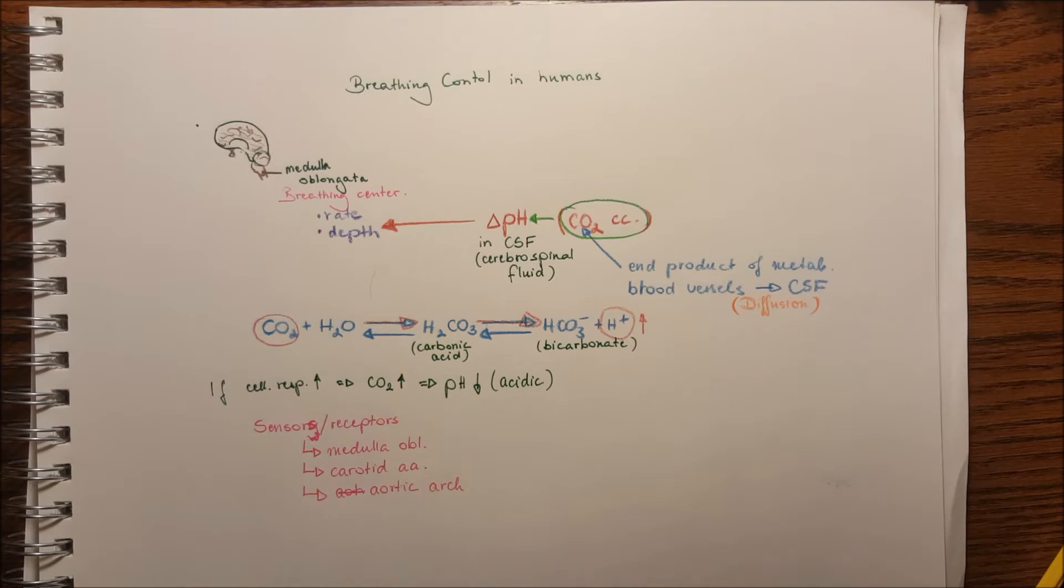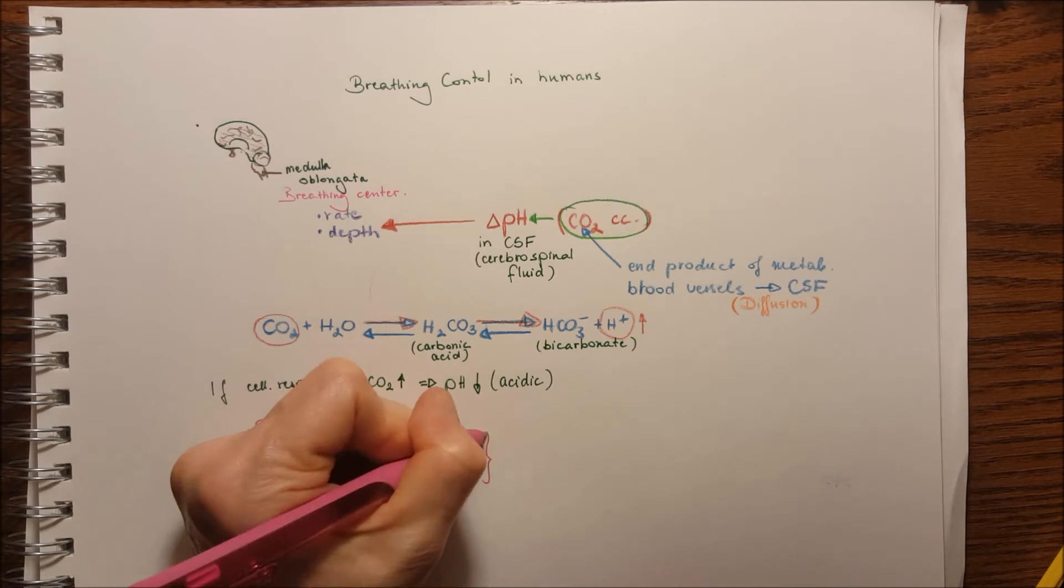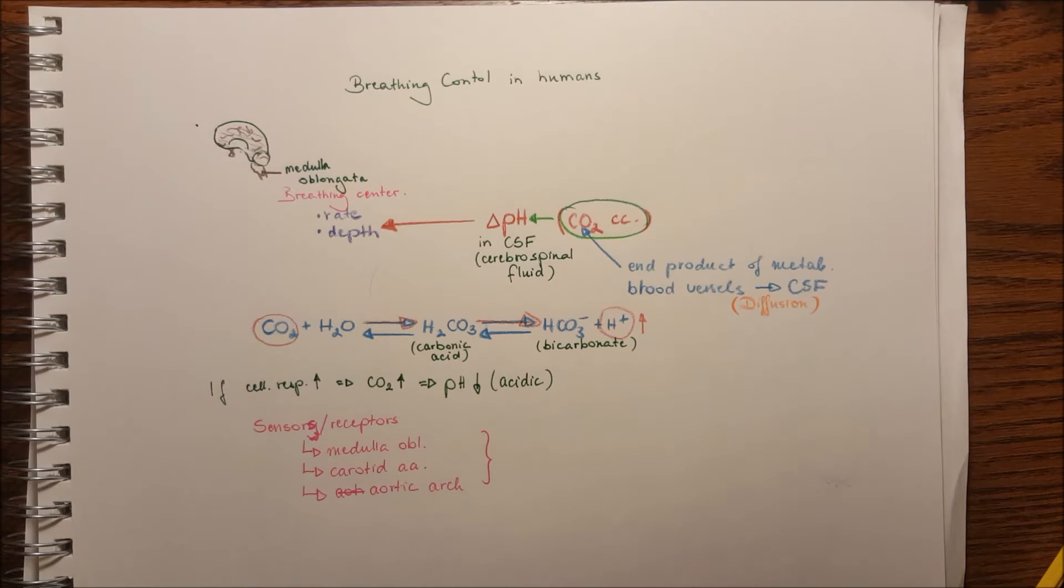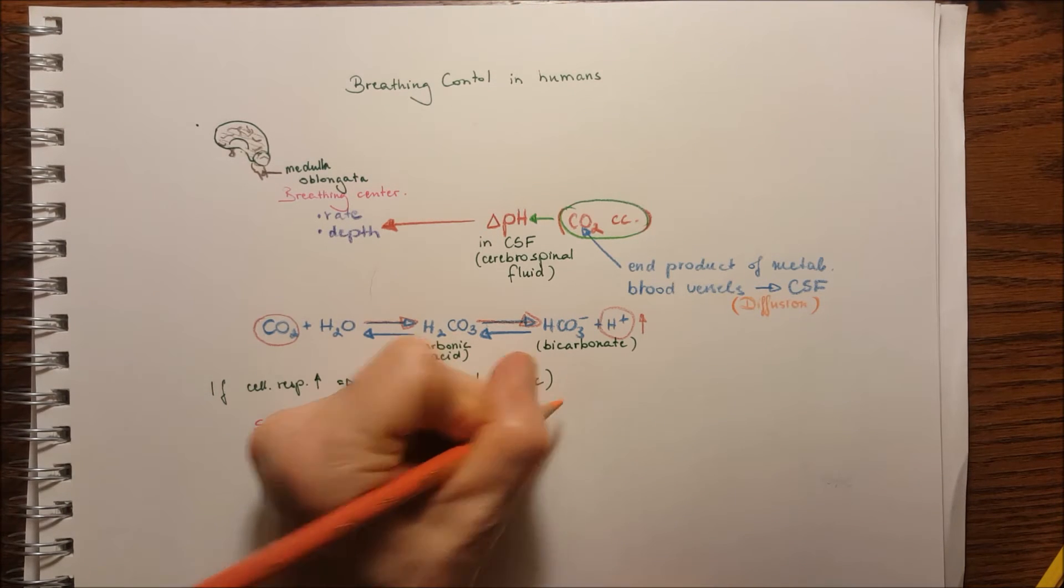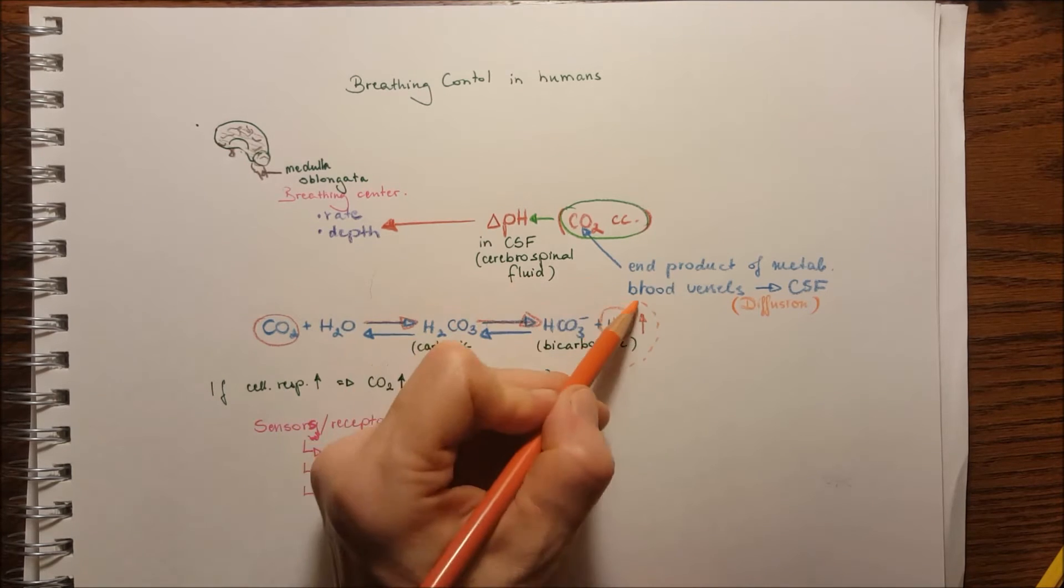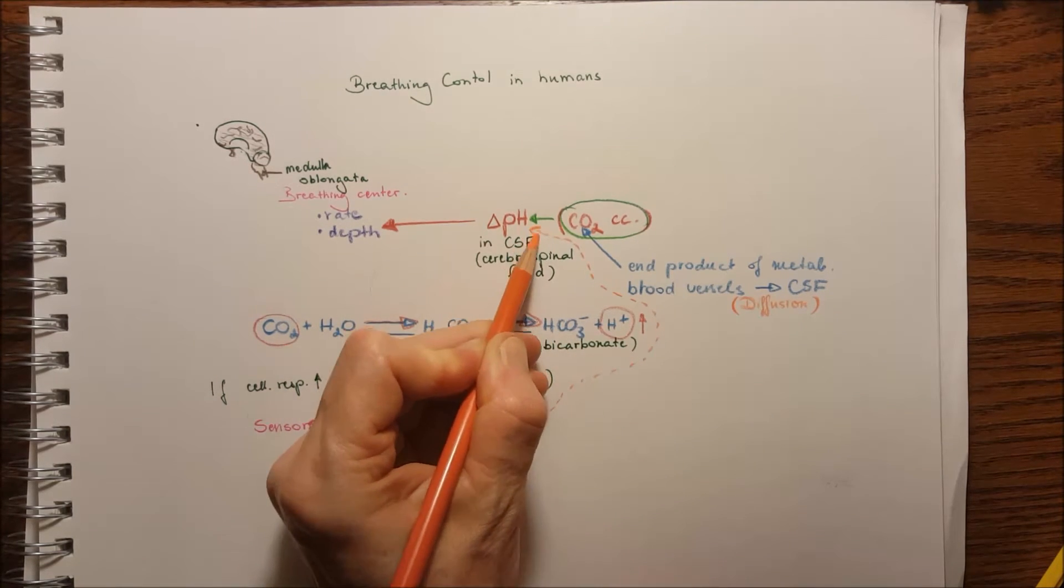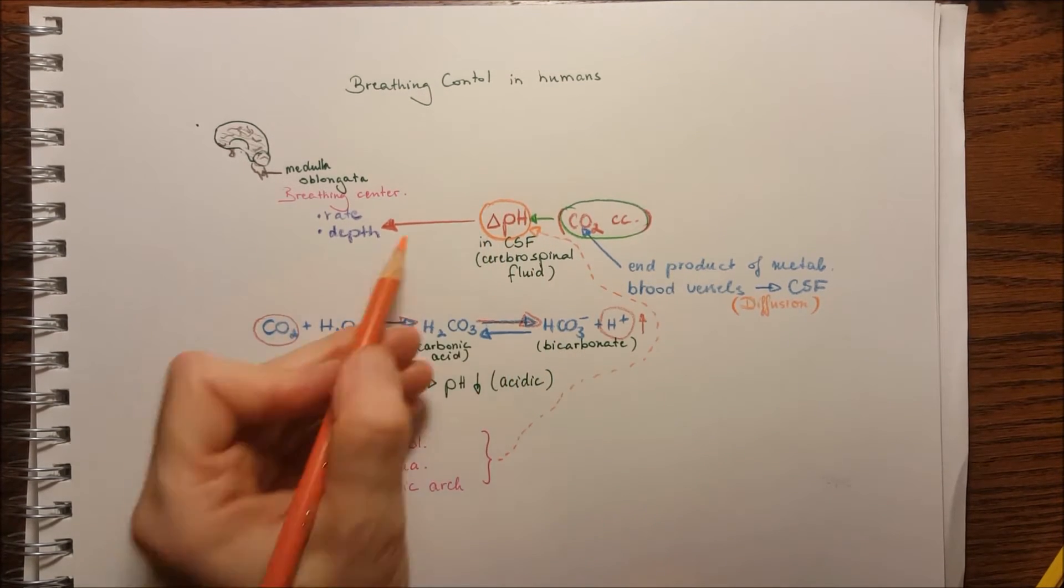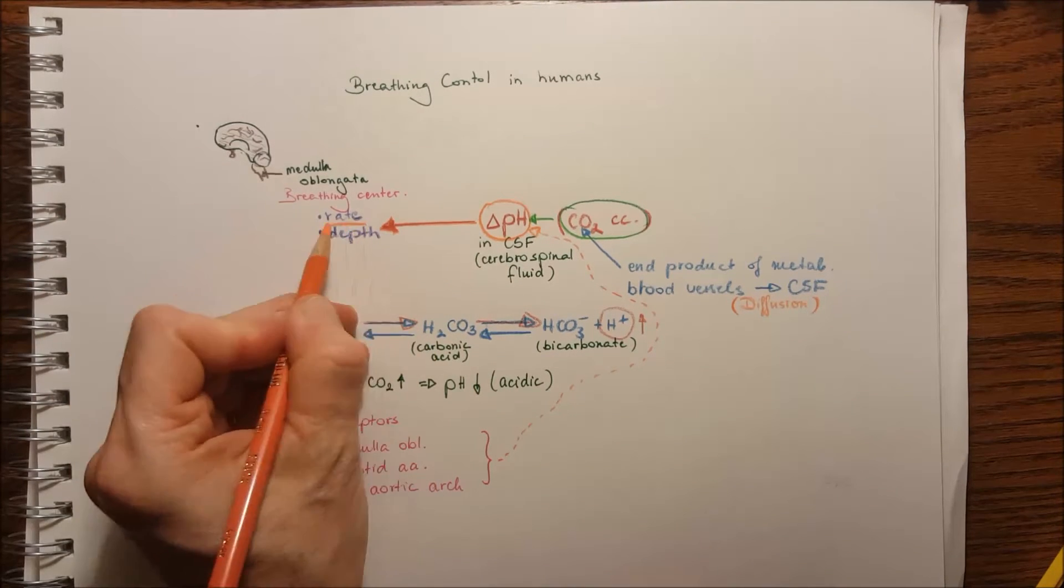As well as in the aortic arch, when the aorta goes up and down, so it's in the arch. These all detect the pH change in the blood or in the cerebrospinal fluid, and they are going to increase or decrease the rate of the breathing as well as the depth.